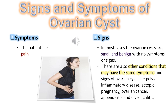Regarding signs and symptoms of ovarian cysts: in most cases, ovarian cysts are small and benign with no symptoms or signs. There are also other conditions that may have the same symptoms and signs as ovarian cysts, such as pelvic inflammatory disease, ectopic pregnancy, appendicitis, and diverticulitis.